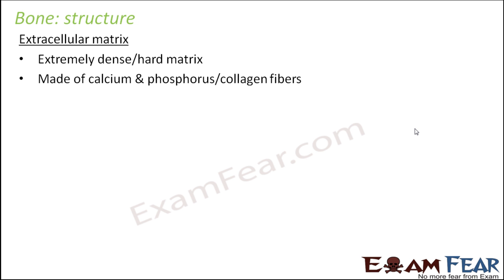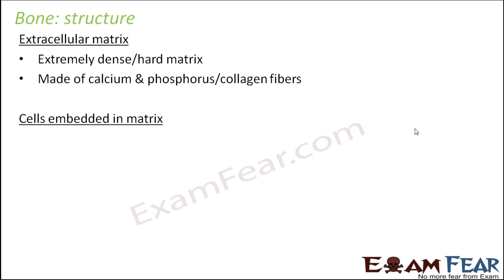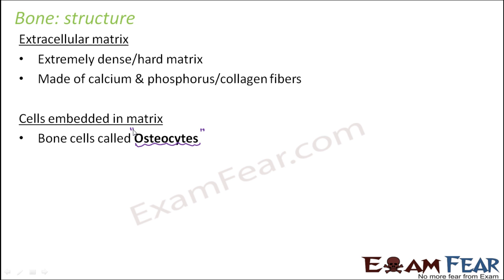Once bones tend to become soft, the skeleton of the body will not remain stiff and stout, so it will start giving problems. The cells embedded in this matrix are called osteocytes — that is the name given to bone cells. Osteocytes are embedded in the hard matrix which is made up of calcium and phosphorus.